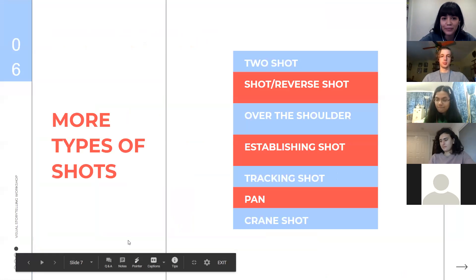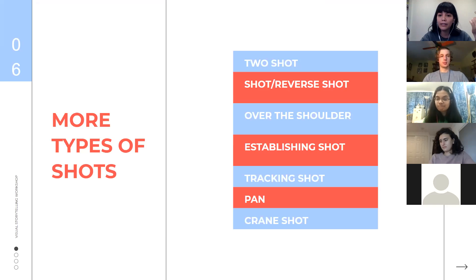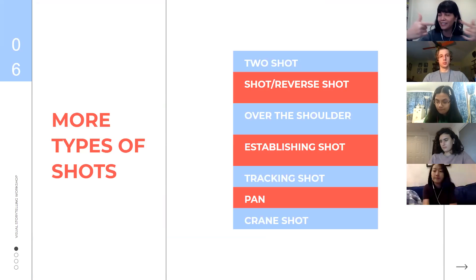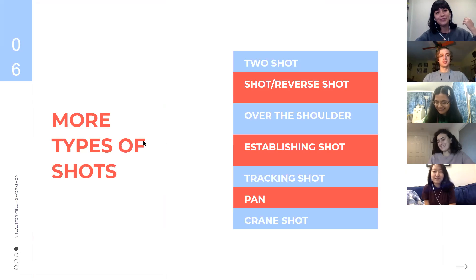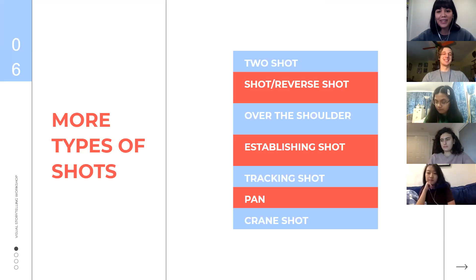Some more types of shots: a two-shot is when you have two people in the frame. A shot/reverse shot is common in conversations — you have a shot of a person talking, then the reverse showing the other person they're talking to, effectively showing you what someone is looking at and then the thing they're looking at. An over-the-shoulder shot shows from behind someone — part of their shoulder and head — and what they're looking at. An establishing shot helps situate your viewer on where the location is and who the people are, typically using a wide or extreme wide shot.